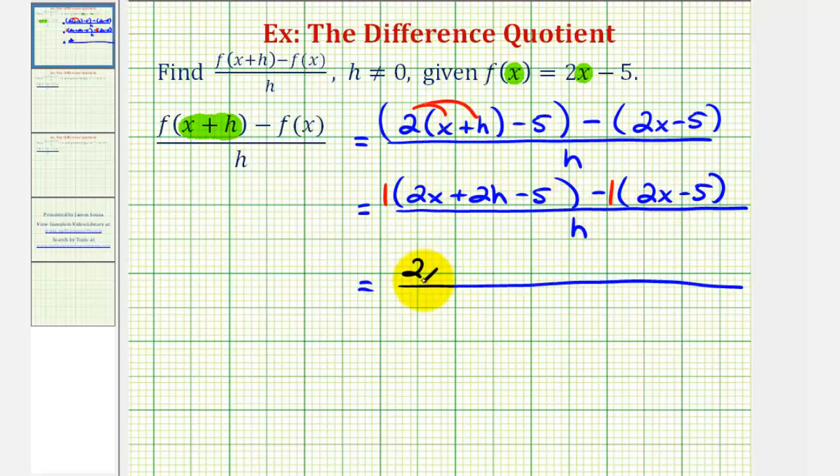So we'll have two x plus two h minus five. And then distributing negative one, that would give us minus two x. And negative one times negative five is positive five, so we have plus five. So it is important that we have these parentheses here to make sure we subtract the entire function f of x.